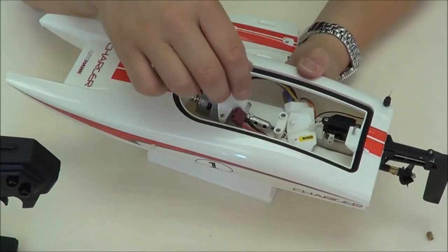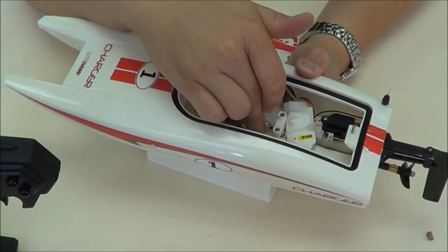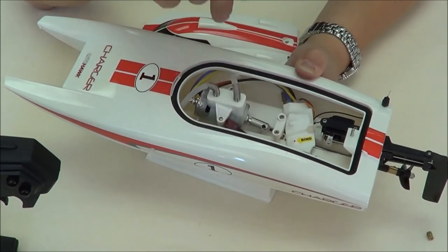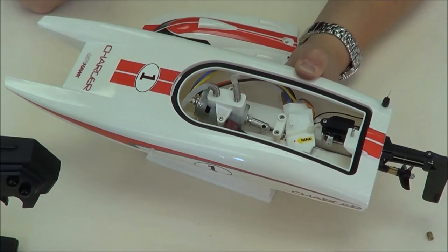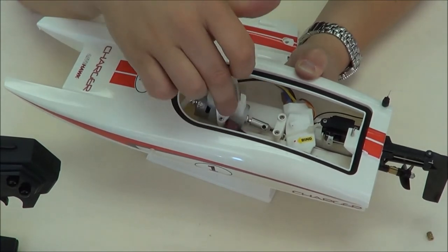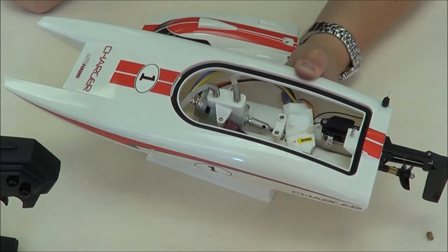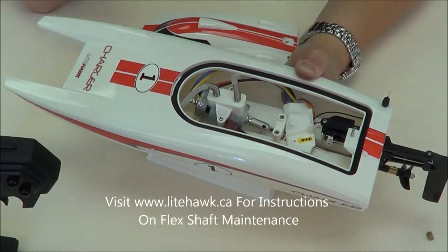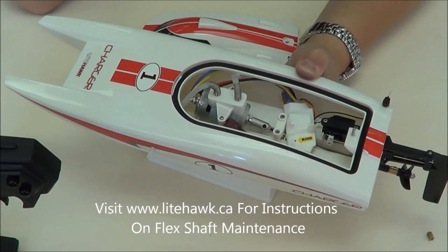The center drive shaft, this collet here has a grub screw in it that's the same size as the allen key we supply. After a bunch of running or if you're going to store the boat for the winter, it's a great idea to re-grease that shaft. It's really the only maintenance that ever has to be done on the boat.